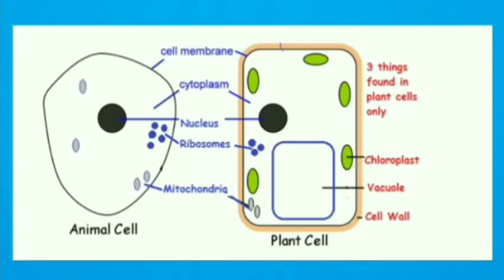There are some features that both animal and plant cells have in common, such as a cell membrane, cytoplasm, and a large nucleus.